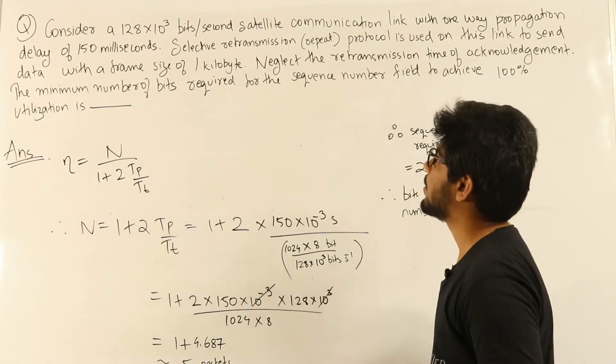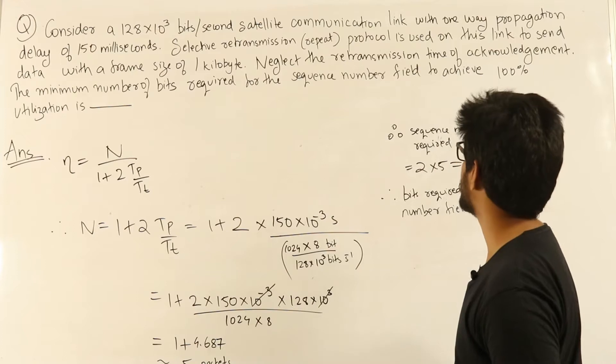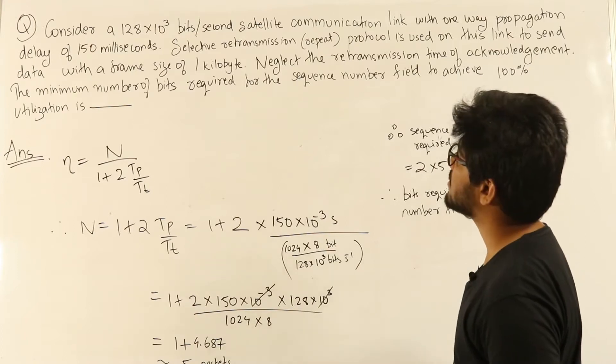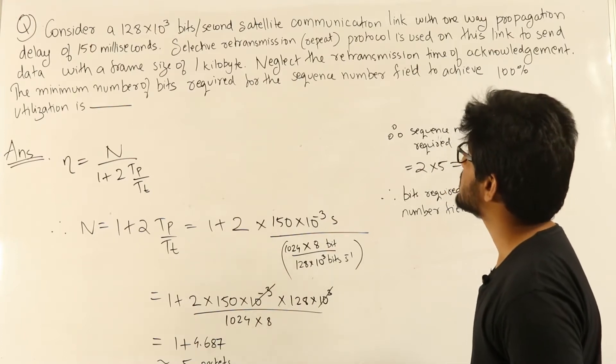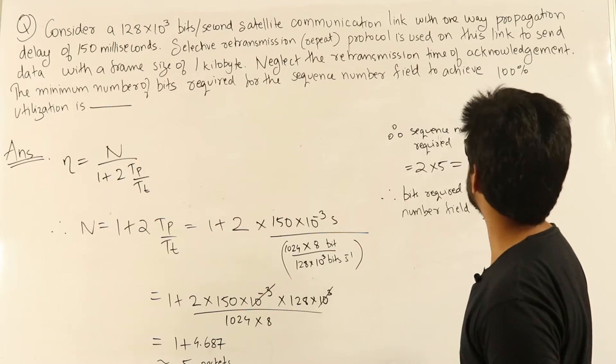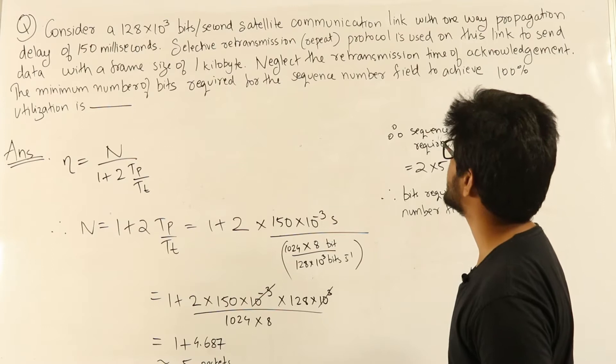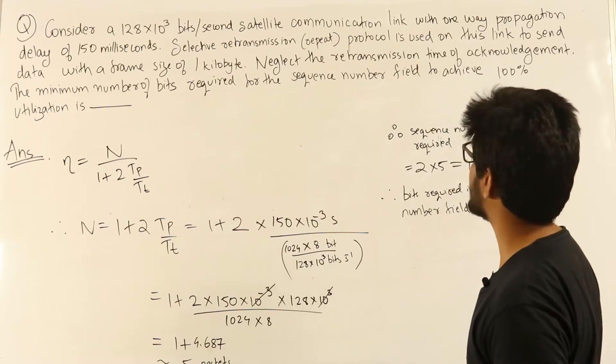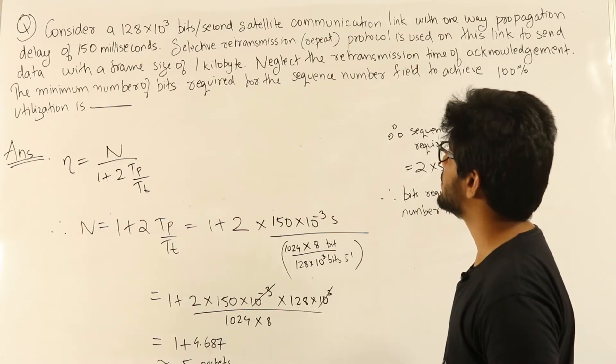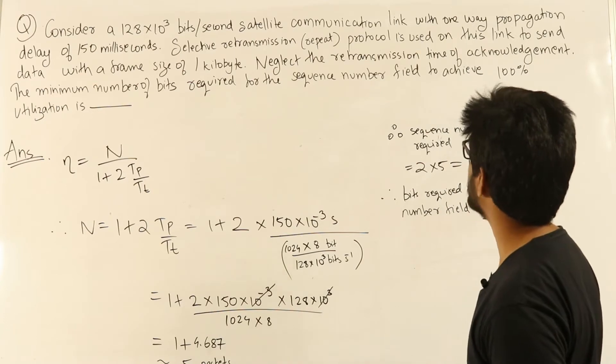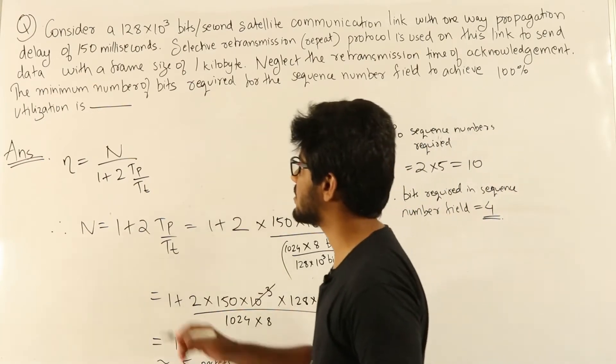Consider a 128 × 10³ bits per second satellite communication link with one-way propagation delay of 150 milliseconds. Selective retransmission protocol is used on this link to send data with a frame size of 1 kilobyte. Neglect the retransmission time of acknowledgement. The minimum number of bits required for the sequence number field to achieve 100% utilization is?